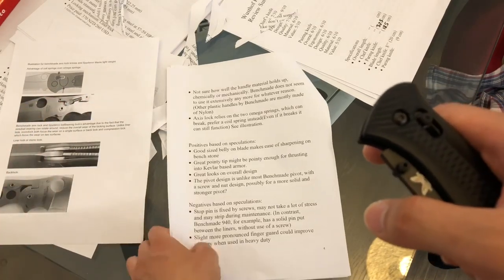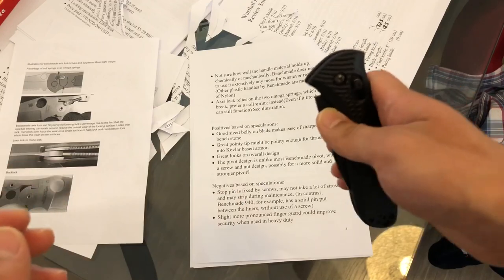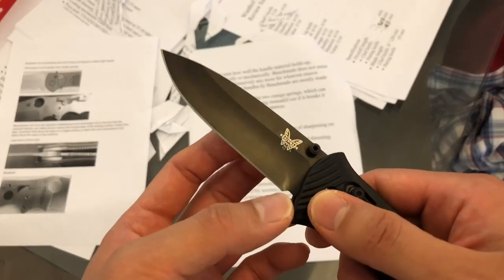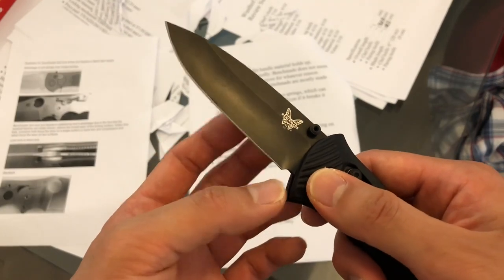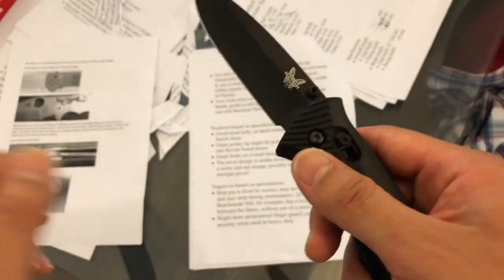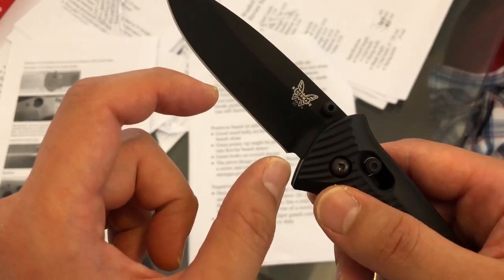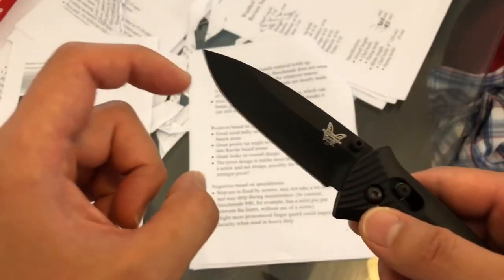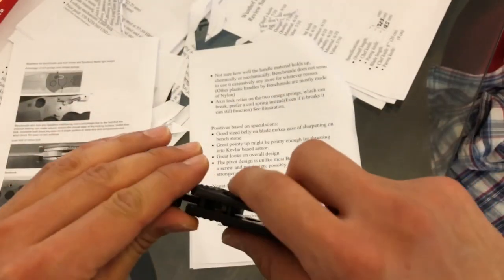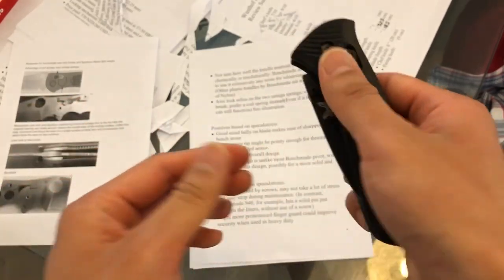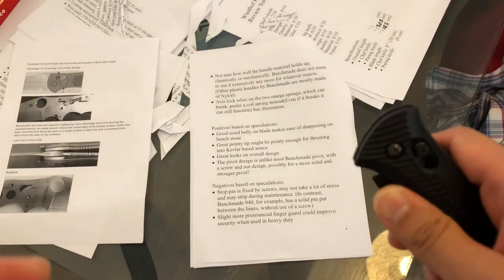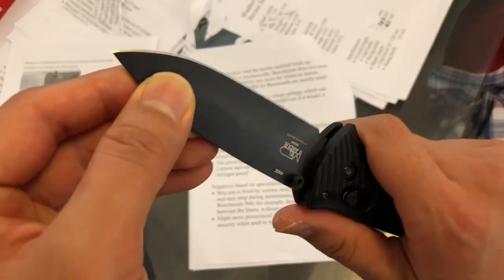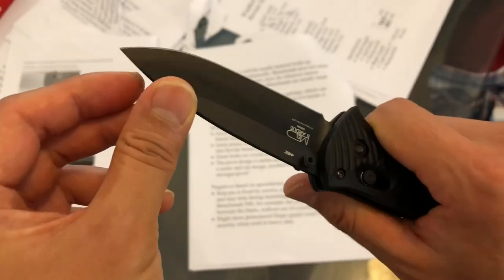And positive things based on my speculation is that the knife has a good belly to actually sharpen on a flat bench stone, which is very nice. And I think that the length of this straight section could be reduced to improve the belly. But there's a lot of belly here. And the pointy tip could probably be used as a weapon against Kevlar, because Kevlar materials don't stand very well against pointy knives.